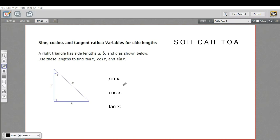In this problem, we're being asked to find the sine, cosine, and tangent of angle x in a right triangle. We're not given any numbers, just variables for the side lengths: a, b, and c.